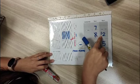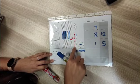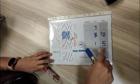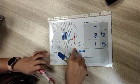This is the renaming that has happened. Now with 12 ones, I would be able to minus 5 ones.